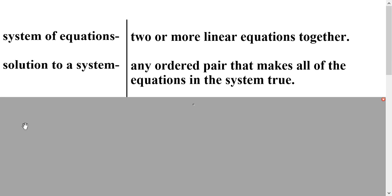Now the solution to a system is any ordered pair that makes all of the equations in the system true. So for example, an ordered pair would be something like (1, 2), and you'll remember that 1 represents x and 2 represents y. And that means that I could plug in 1 for x and 2 for y into both equations, and it would be a solution for both equations at the same time.